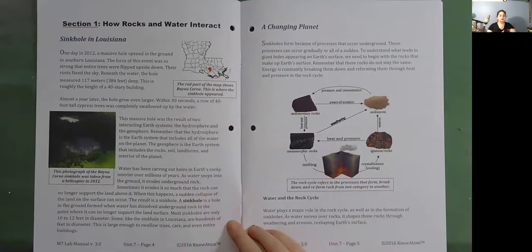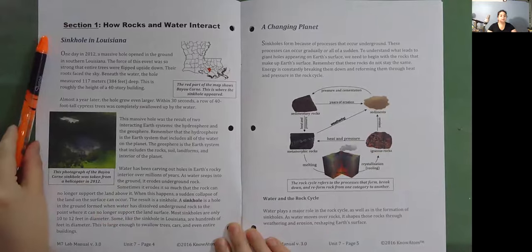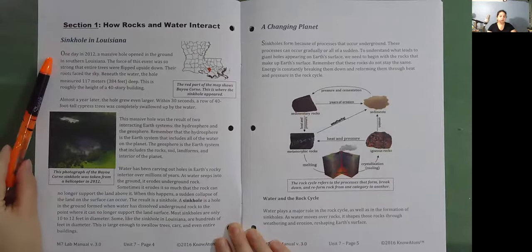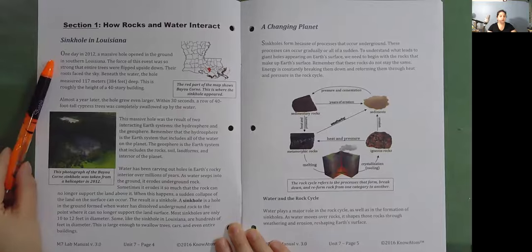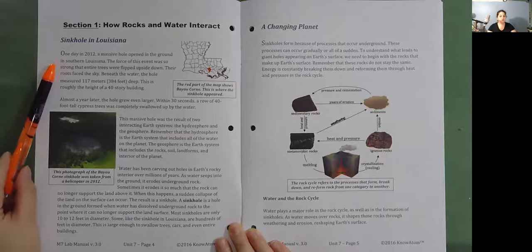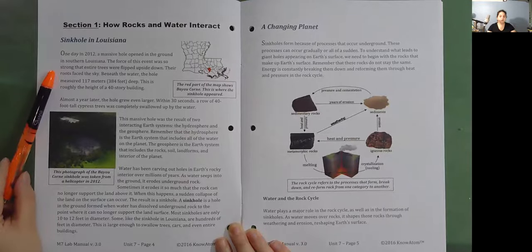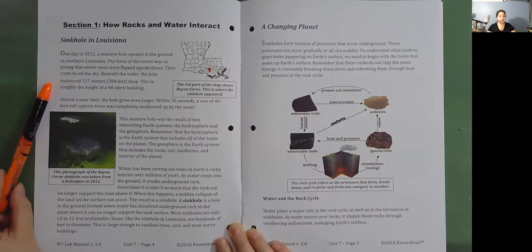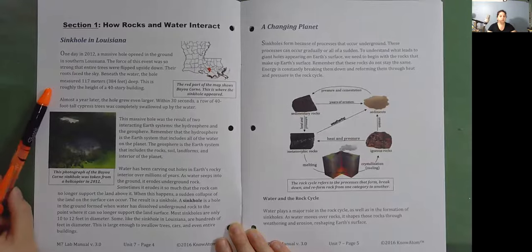Section 1: How rocks and water interact. Sinkhole in Louisiana. One day in 2012, a massive hole opened in the ground in southern Louisiana. The force of this event was so strong that entire trees were flipped upside down. Their roots faced the sky. Beneath the water, the hole measured 117 meters or 384 feet deep. This is roughly the height of a 40-story building.